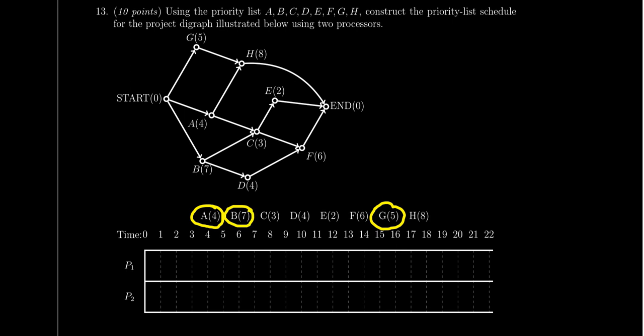By the priority list, job A is the highest priority, so we're going to give that to processor one. That'll take four units of time to do A. Then B, we're going to give to processor two. That'll take seven days to do that one. So B is now in execution.